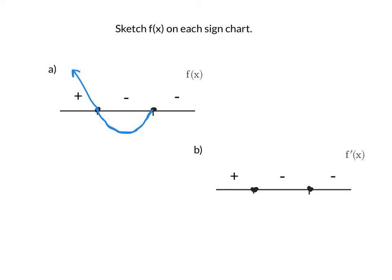On the last interval, f of x is negative again, which means it's just going to continue to go down.